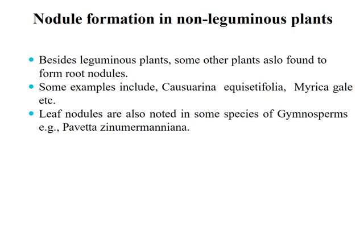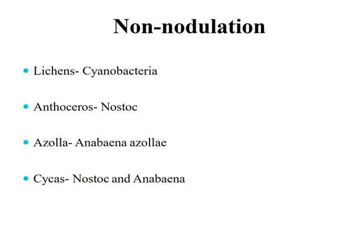Besides leguminous plants, some other plants also form root nodules. Examples include Casuarina equisetifolia and Myrica gale. Leaf nodules are also noted in some species of gymnosperms. Some organisms can fix atmospheric nitrogen into an available form without forming root nodules — these include lichens, cyanobacteria, Anthoceros, Nostoc, and Anabaena.